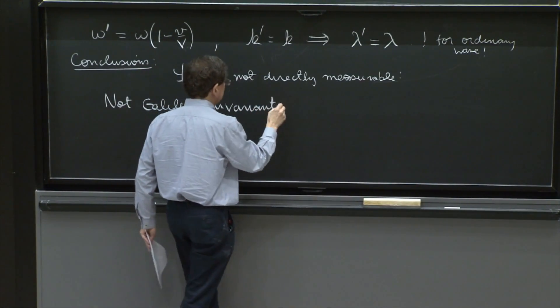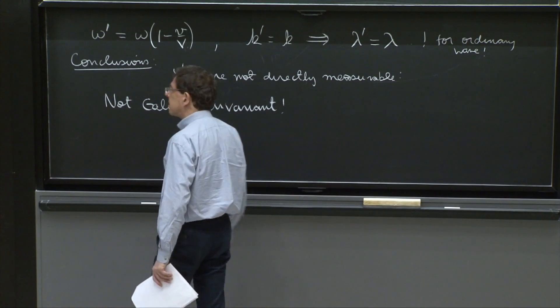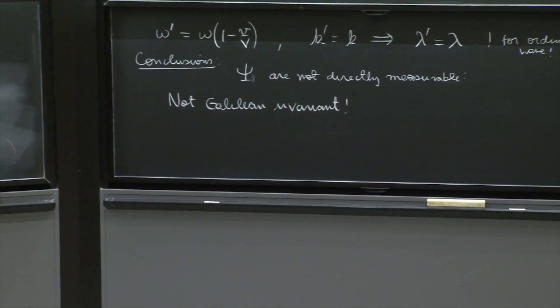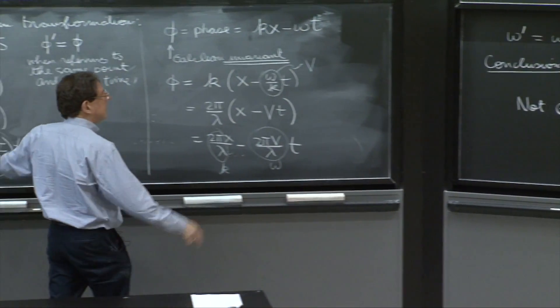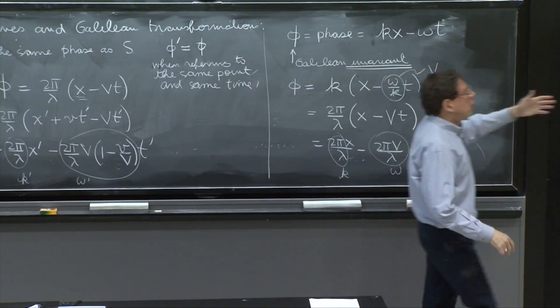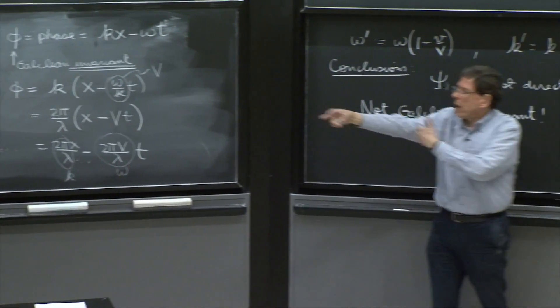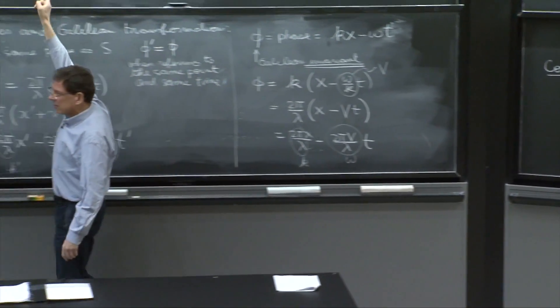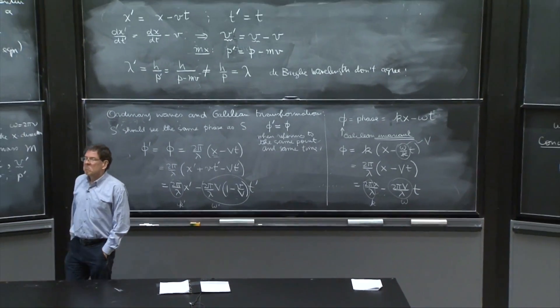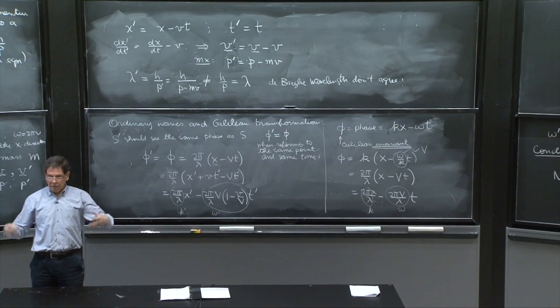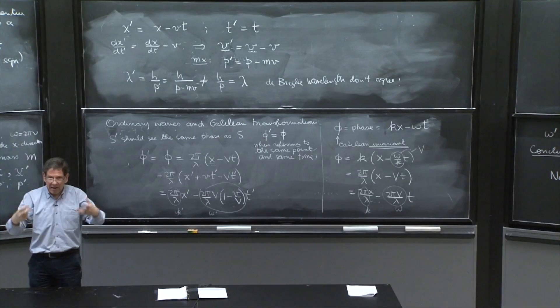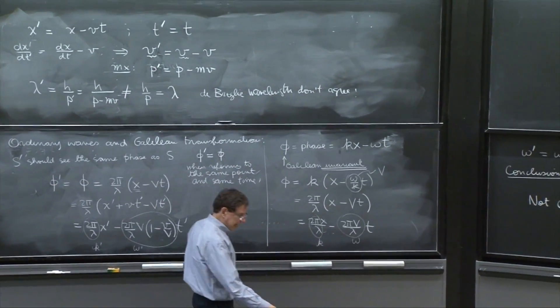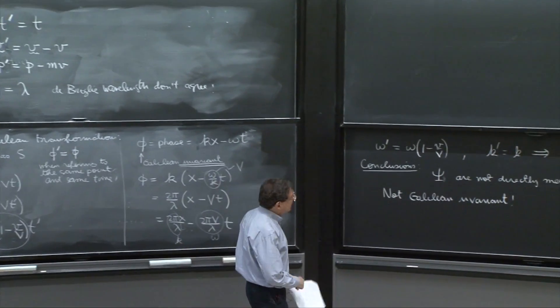The second thing is that they're not Galilean invariant. And that sets the stage for problem six. You see, the fact that this phase that controls these waves is Galilean invariant led you to the equality of the wavelengths. But these wavelengths don't do that. The de Broglie wavelengths don't transform as they would do for a Galilean invariant wave. Therefore, this thing is not Galilean invariant.